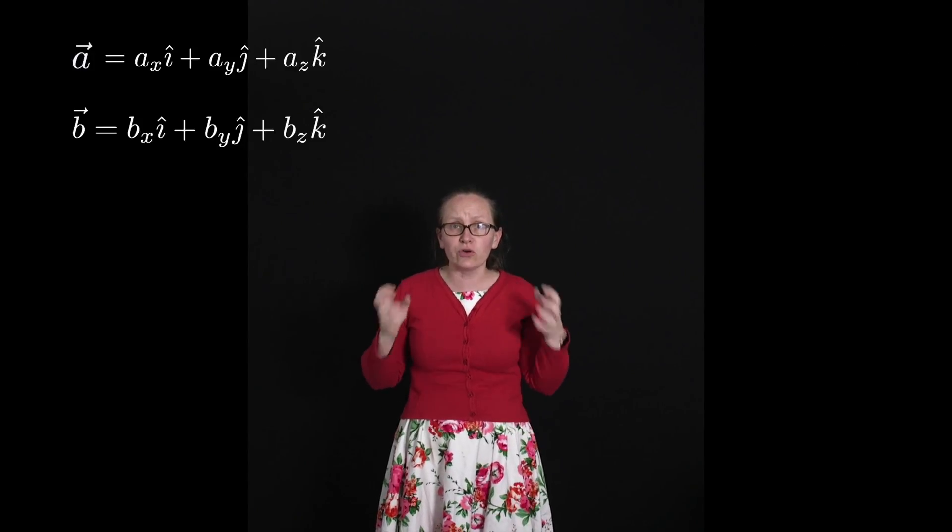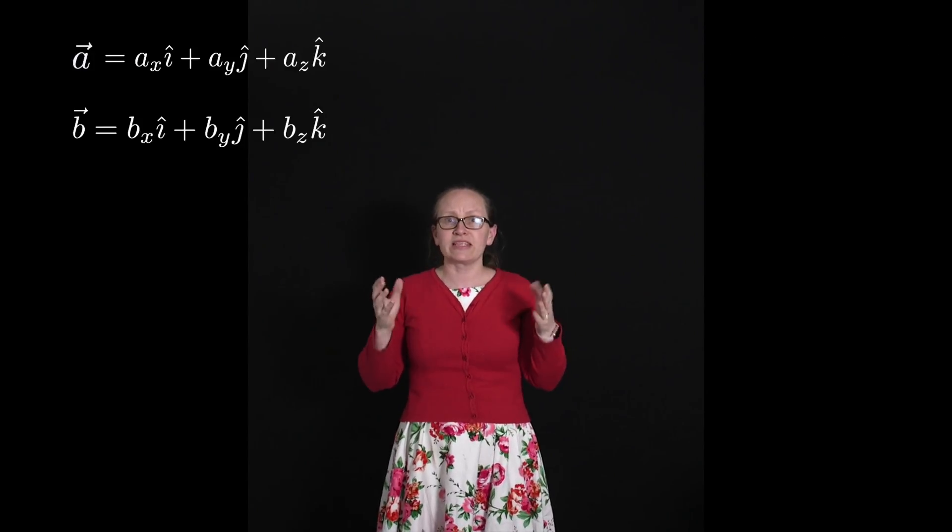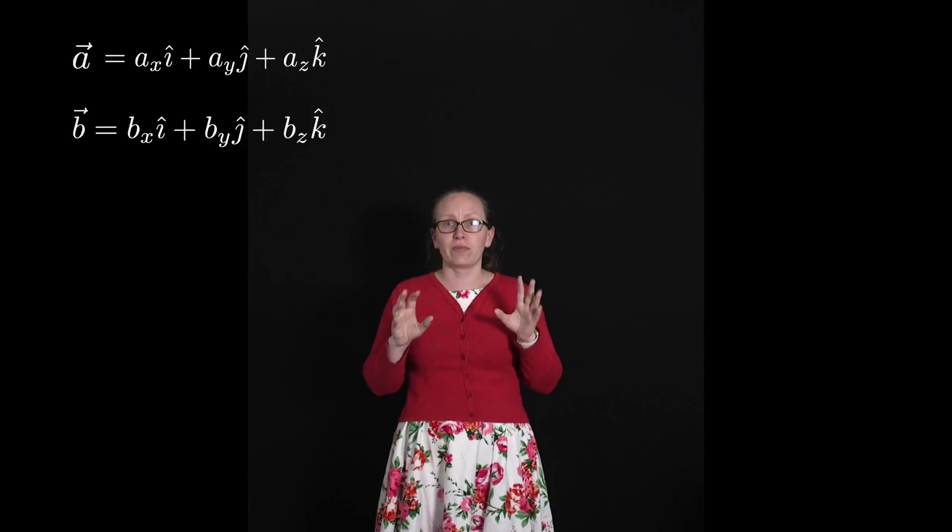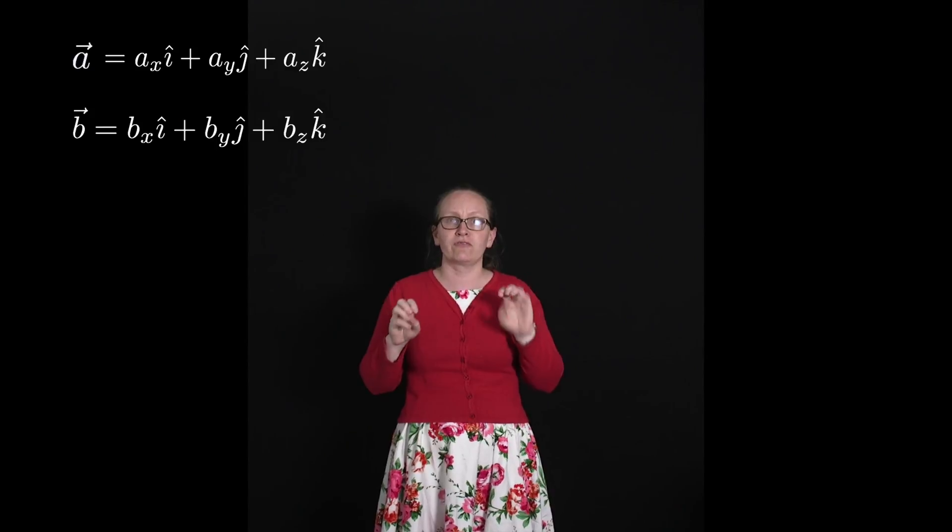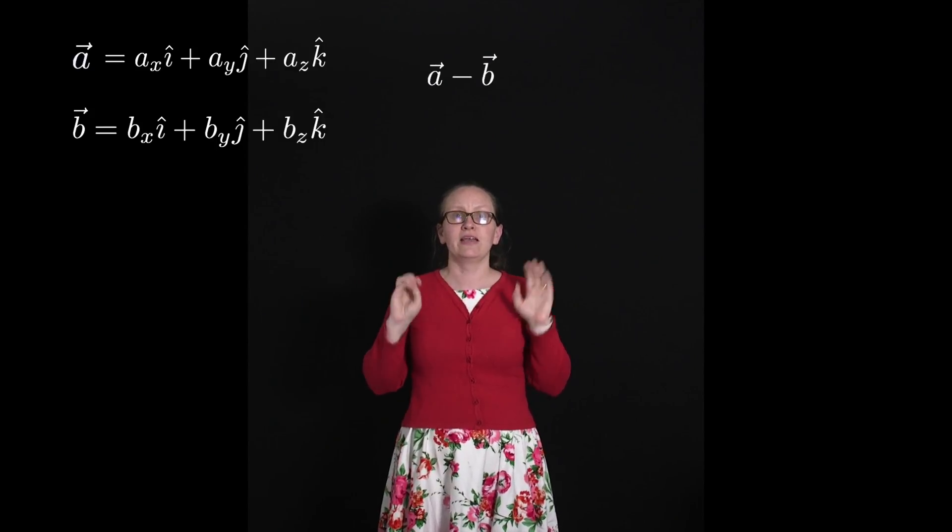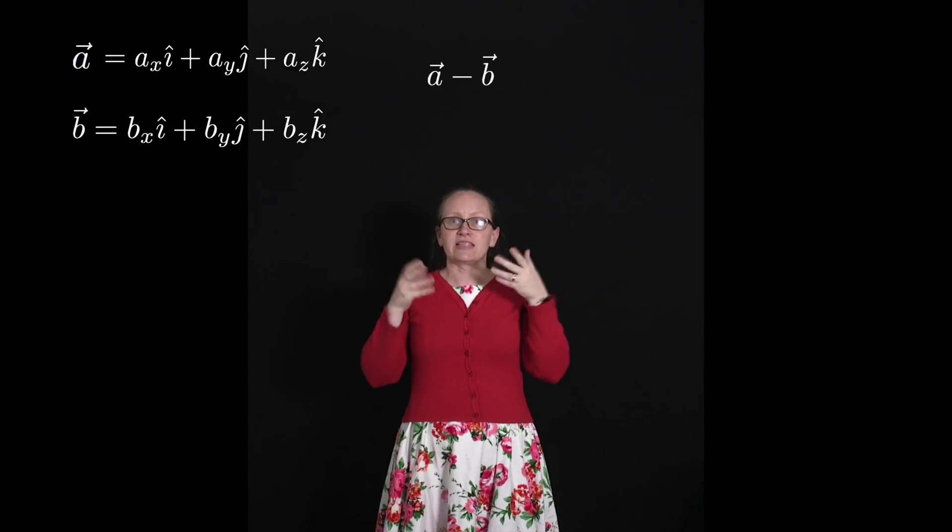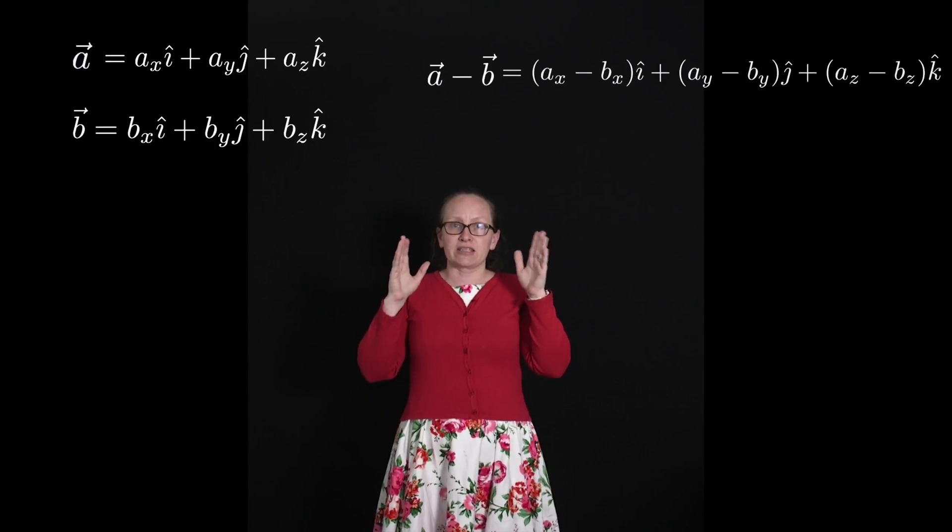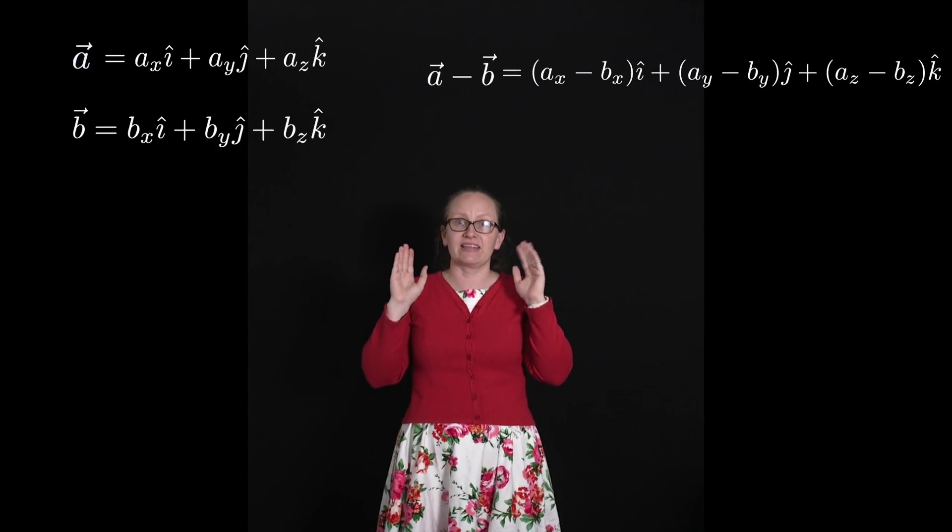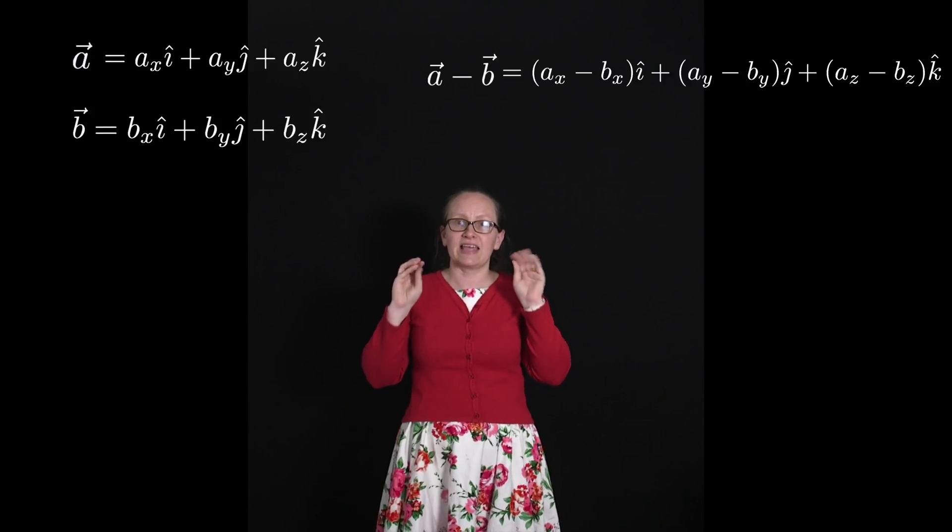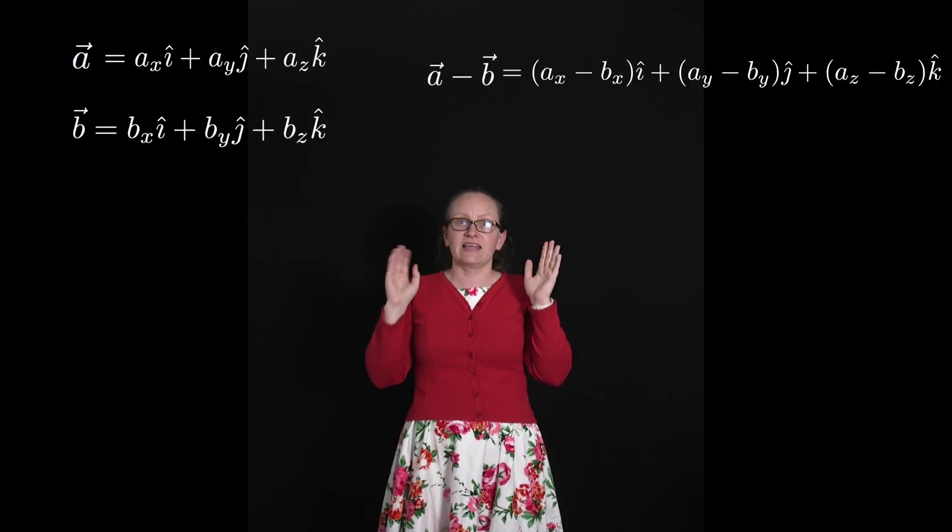Subtraction is also really easy. Once again, we just subtract the components which are acting in the same direction. So if we were to do vector a minus vector b, this is equal to (ax minus bx) in the i direction, plus (ay minus by) in the j direction, plus (az minus bz) in the k direction.